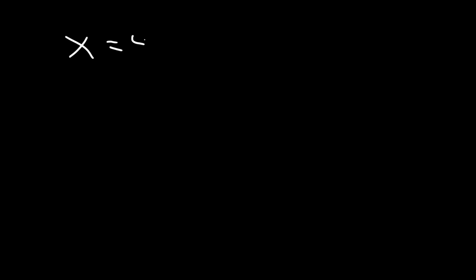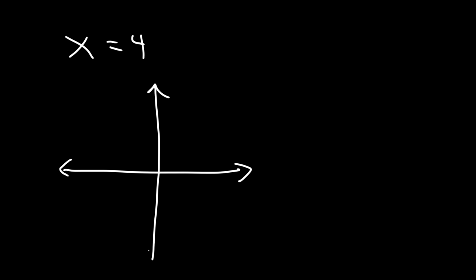What about x equals four — will that pass the vertical line test? X equals four is a vertical line, and if you draw a vertical line on it, it's going to touch it at an infinite number of points. So that's not going to be a function.